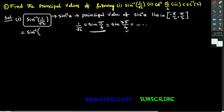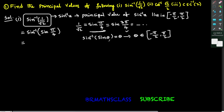So in place of 1 by root 2 you write sin pi by 4. Now you observe it looks like sin inverse of sin theta. What is the formula of sin inverse of sin theta?